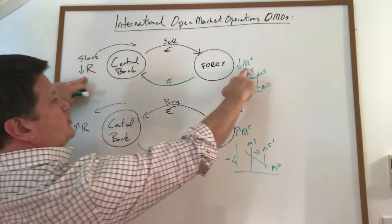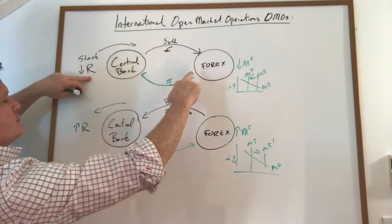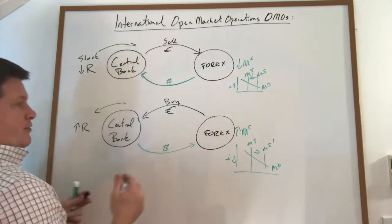Notice the reserves move in the same direction as the money supply. So when you sell reserves, you lower it at home, and you lower the foreign, you lower the money supply.